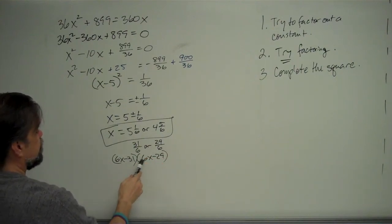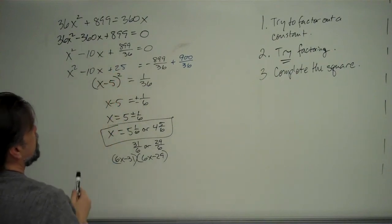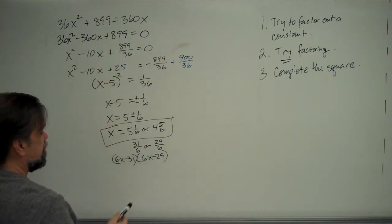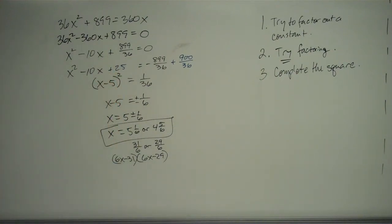So that's a problem. Being able to immediately identify that 899 is 31 times 29, that's just not something that you can expect people to do. So that's why completing the square comes in so handy, because factoring is not always obvious what you're supposed to do.